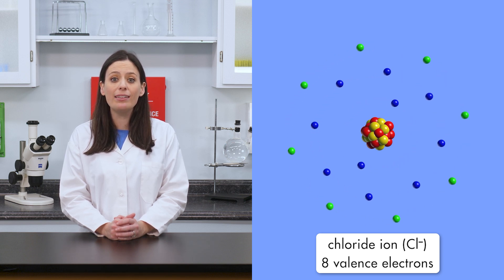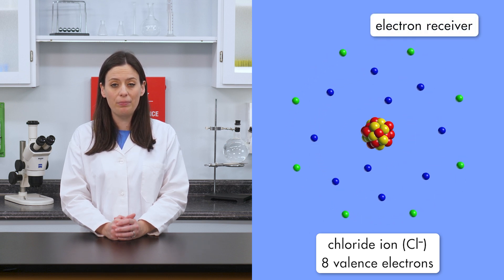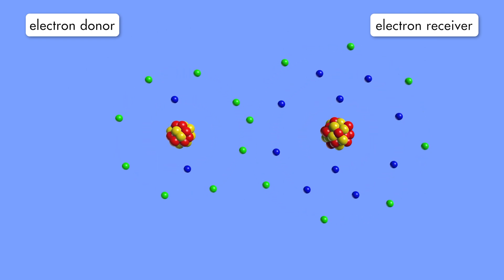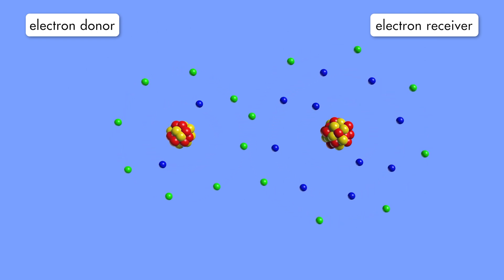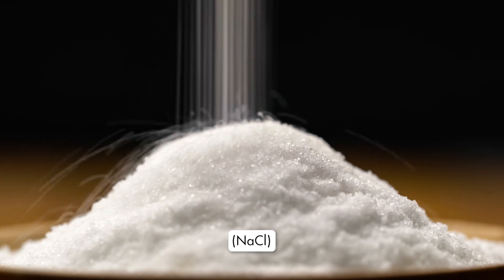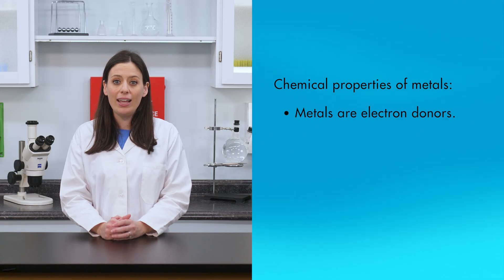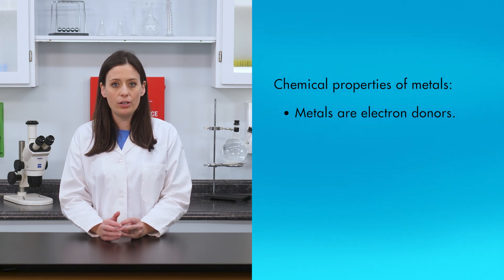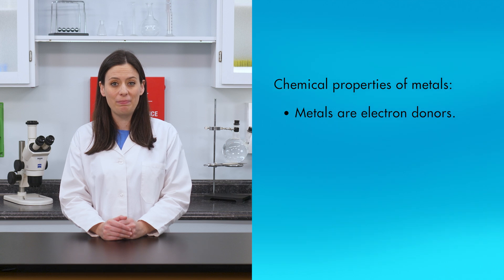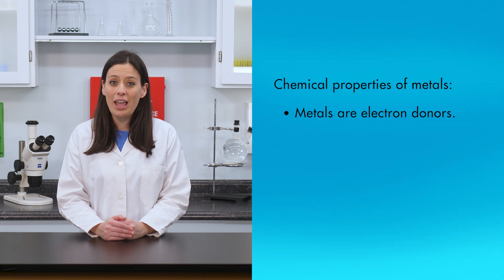An atom that readily gains an electron in a chemical reaction is an electron receiver. Since sodium is an electron donor, it readily reacts with chlorine, an electron receiver, to produce the ionic compound sodium chloride — commonly known as table salt. Like sodium, all metals are electron donors, which is a chemical property of metals. They easily give up electrons to bond with electron receivers in chemical reactions.